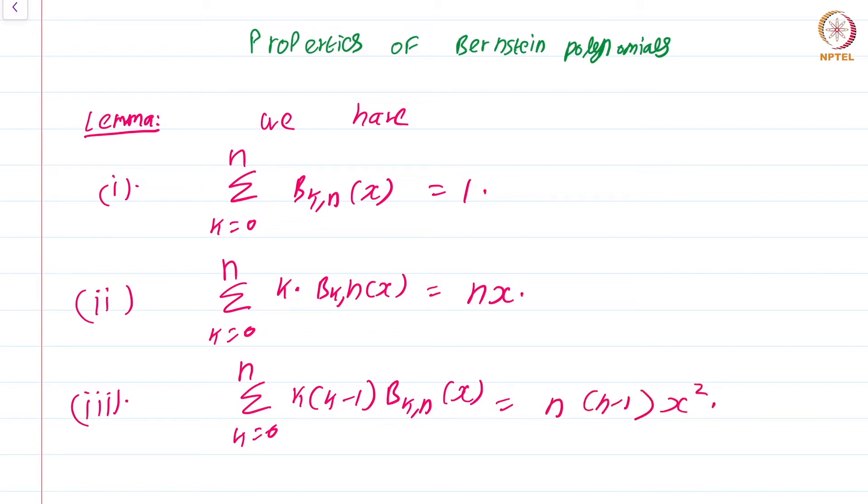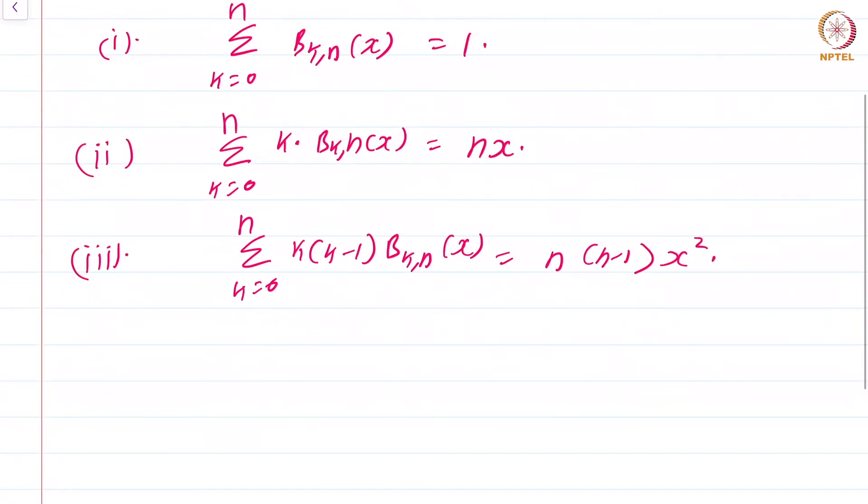So, these are some of the basic algebraic identities involving the Bernstein polynomials that will be needed in the proof of Weierstrass approximation theorem. So, let us see a proof.